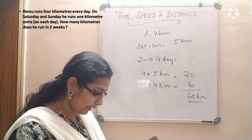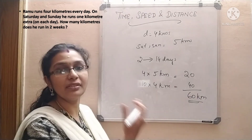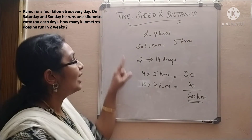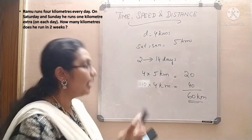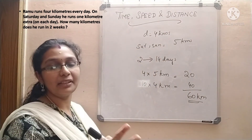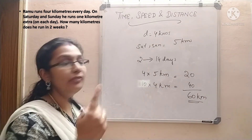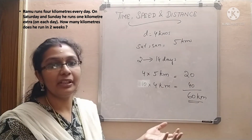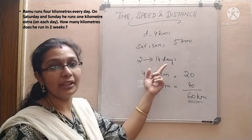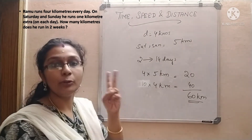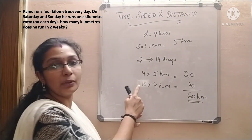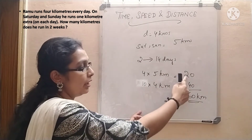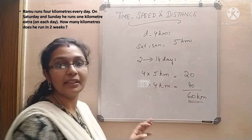They are asking in kilometers. If the answer were required in meters, you would multiply by 1000. To summarize: Ramu runs 4 km daily except Saturday and Sunday when he runs 1 km extra. In 2 weeks (14 days), with 2 Saturdays and 2 Sundays (4 weekend days), he runs 5 km on 4 days and 4 km on 10 days, totaling 60 kilometers.